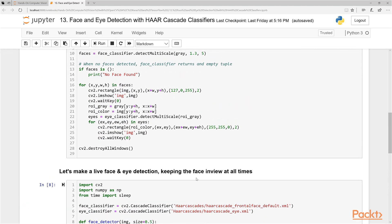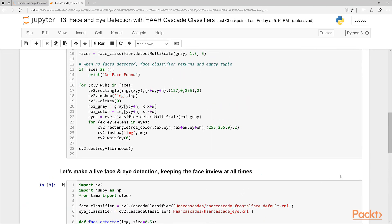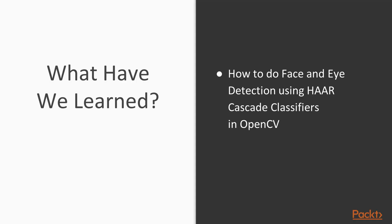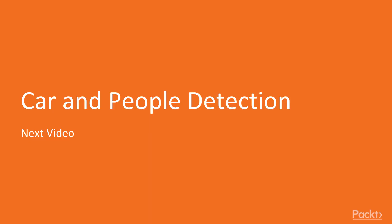That's it for this video. To summarize, we learned how to do face and eye detection using Haar Cascade Classifiers in OpenCV, including live detection using a webcam. Now let's move on to car and people detection in the next video. Thank you.